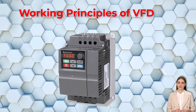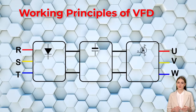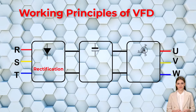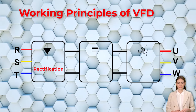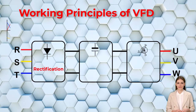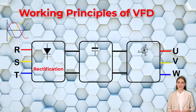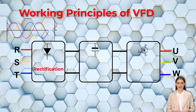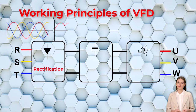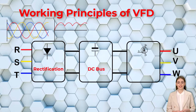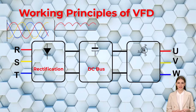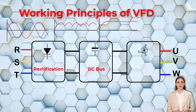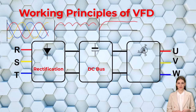The core of a VFD is its ability to manipulate the frequency and voltage of the AC power supply to the motor. This involves a three-stage process. First is rectification: incoming AC power is rectified into DC power using diodes or thyristors, converting the alternating current into direct current. Second is the DC bus: the rectified DC power is stored in a DC bus capacitor, smoothing out any ripples and providing a stable DC voltage source.